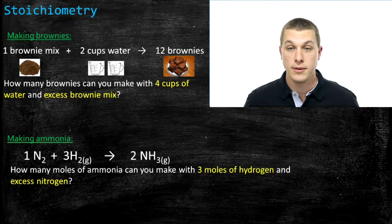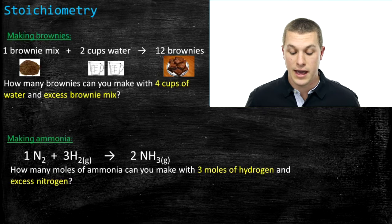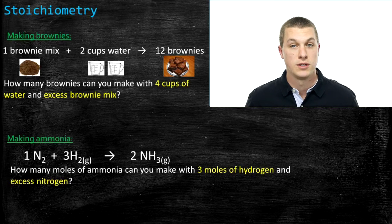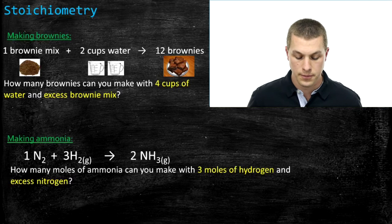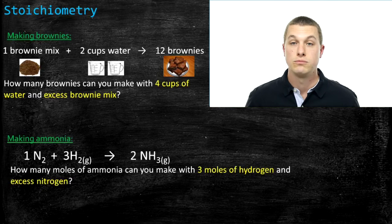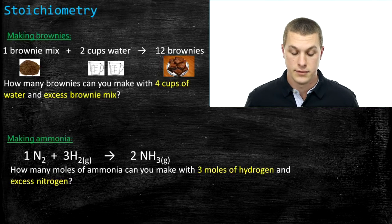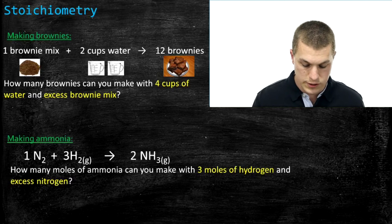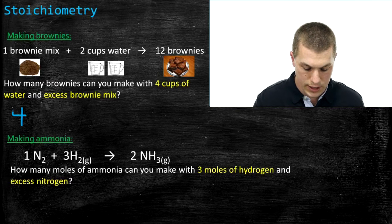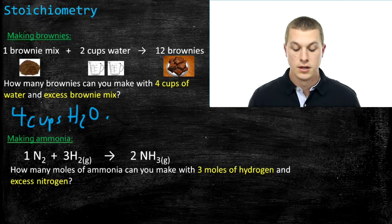Now let's make brownies. We put in a brownie mix combined with two cups of water and get out 12 brownies. This is more complicated because each time we run the recipe we don't get one product — we get 12 brownies. The chemical reaction below for making ammonia (NH3) is the same idea: one nitrogen plus three hydrogens gives two ammonias. We have to account for the coefficient in front of both the ingredient and the product.